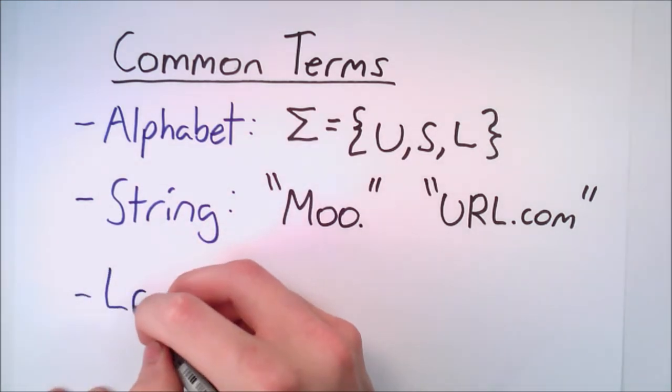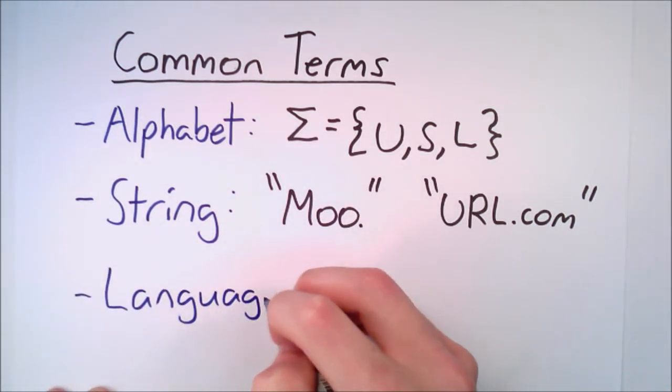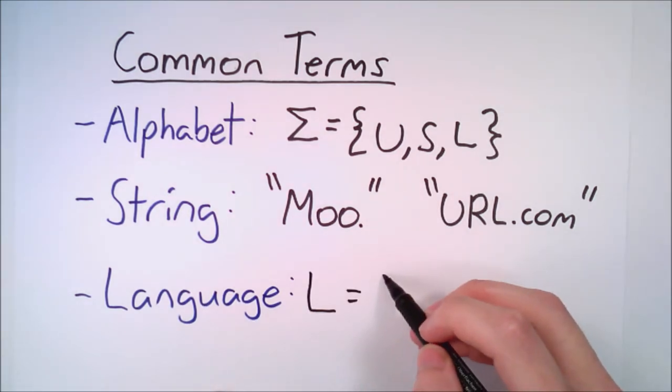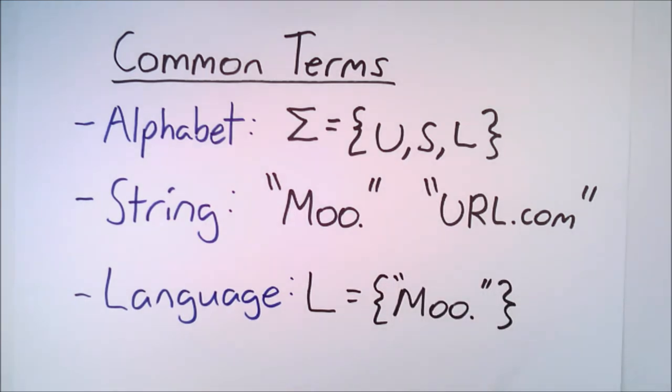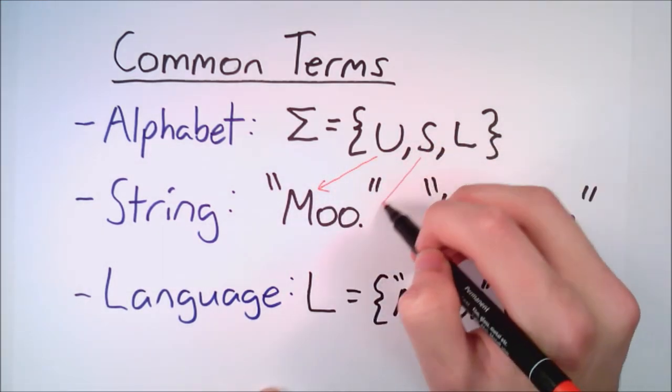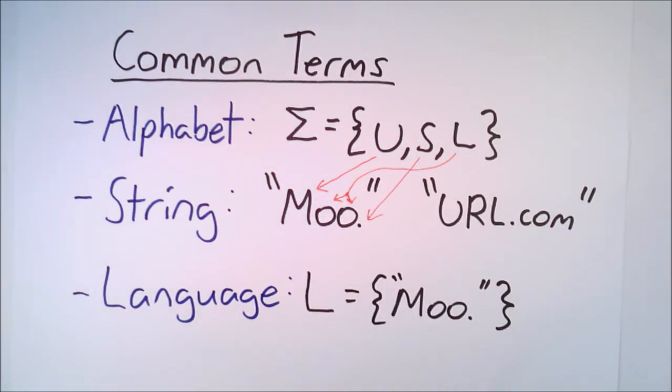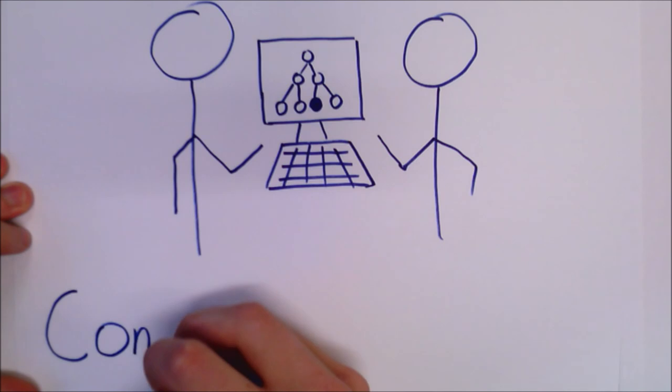Lastly, we have a language. This is all the possible strings that are accepted by our automaton. Moo is one of the many strings in this language, but although url.com is a string, it is not in our language because it was not accepted by our automaton.